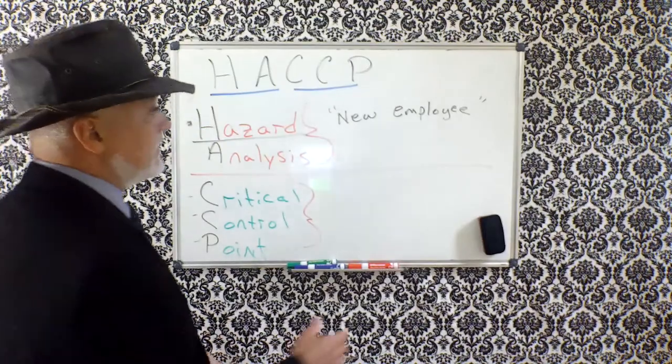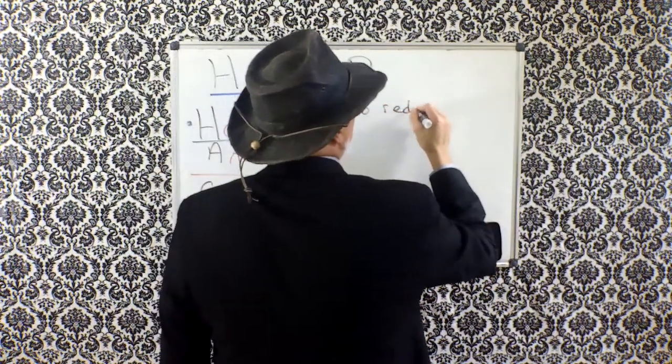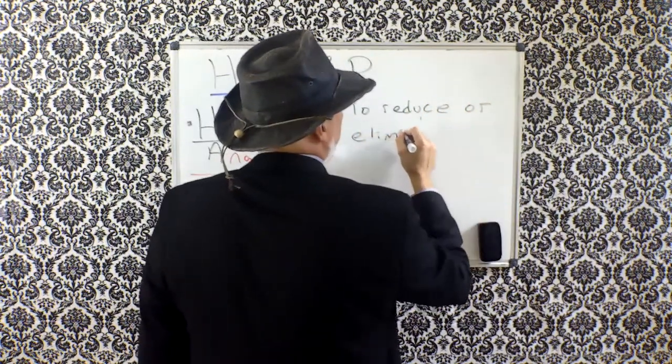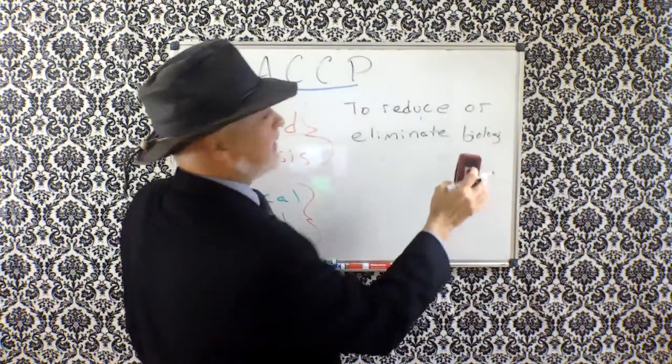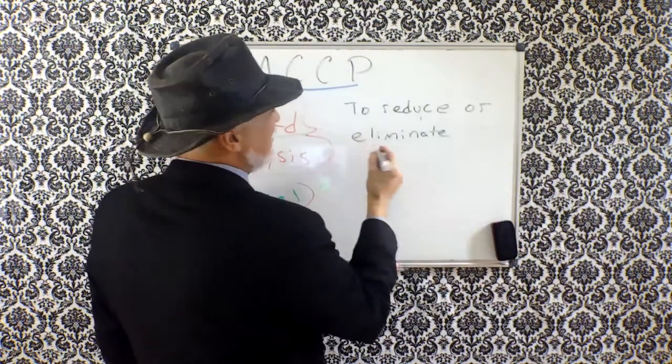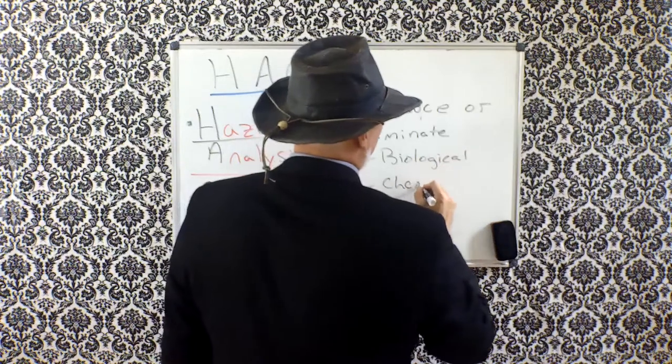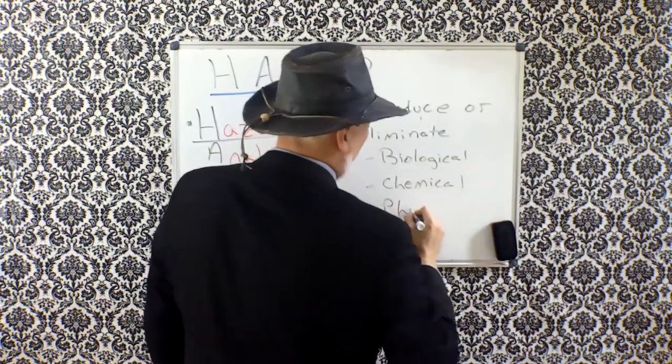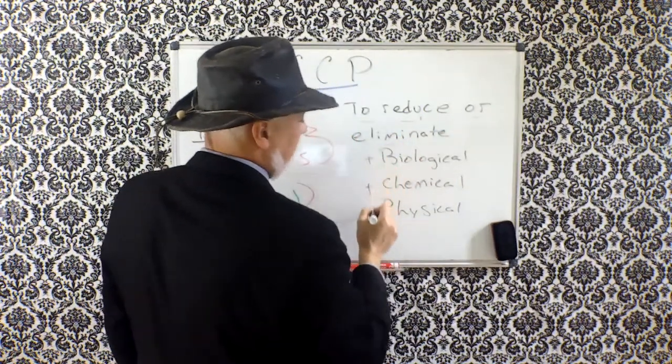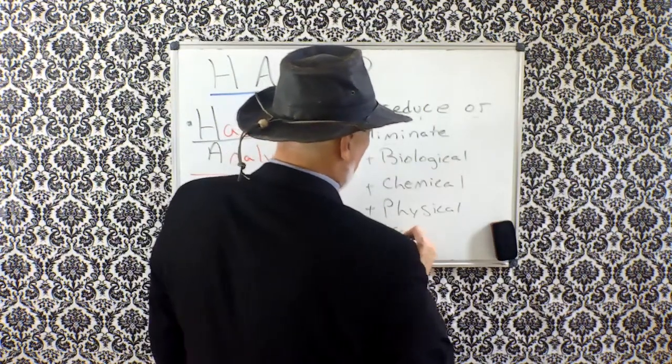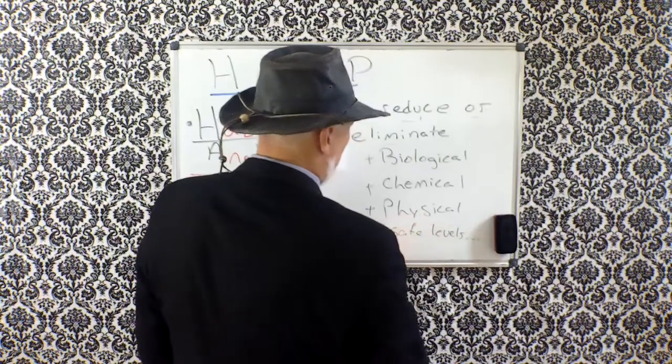Hazard analysis, a quick definition of hazard is to reduce or eliminate biological, chemical, and/or physical hazards. To reduce or eliminate biological, chemical, or physical hazards to safe levels. That's the definition.